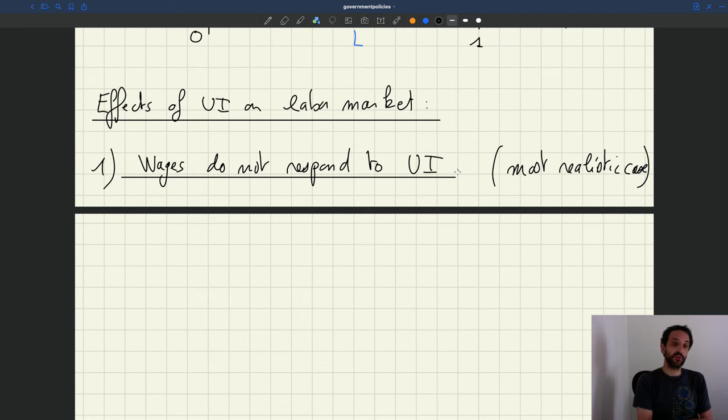We are going to start with a downward sloping labor demand just because we've argued that it's a more realistic shape for the labor demand which can capture a lack of jobs in the economy. And in the case of UI, we'll see it has other desirable and realistic properties.